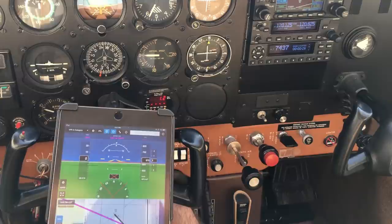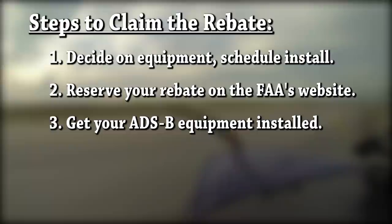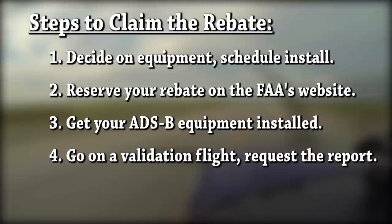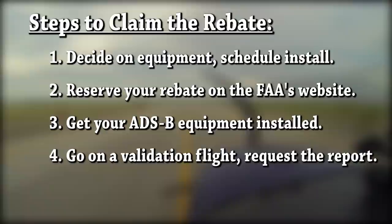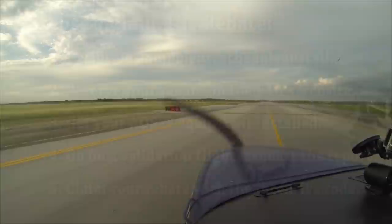Step two: reserve your rebate online with all the appropriate information — it's just a simple form on the FAA's website. Step three: get the equipment installed in your airplane by your certified shop of choice. Step four: take the airplane on a validation flight, perform the required maneuvers in rural airspace, and request the performance report on the FAA website. This is the step we're about to perform. Step five: if the report shows all green, you can claim your rebate with the incentive code. If not, just redo step four until you get it right.